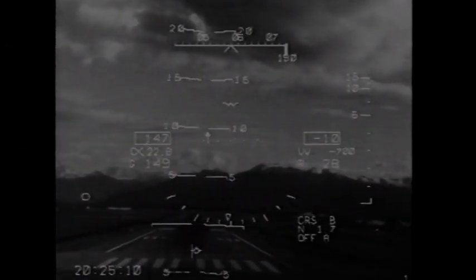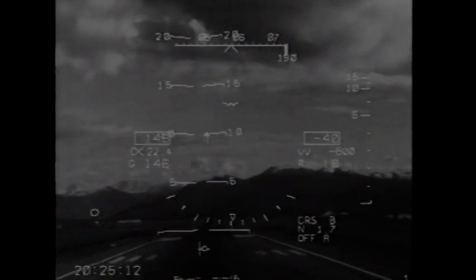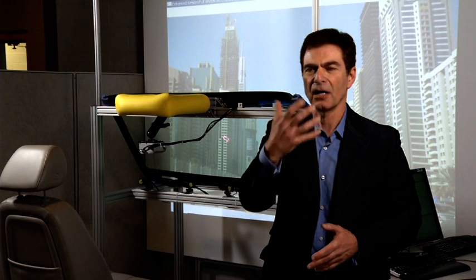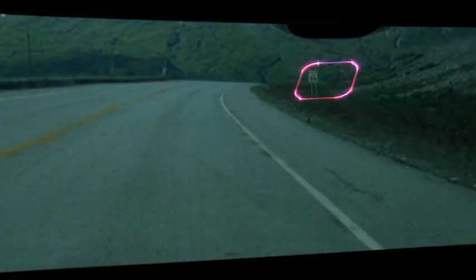Infrared sensor can show the temperature difference between the runway and the adjacent grass. That can be displayed on a HUD, and you can land your plane. Basically, what it does is make your eyes infrared cameras.